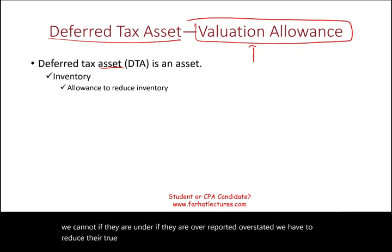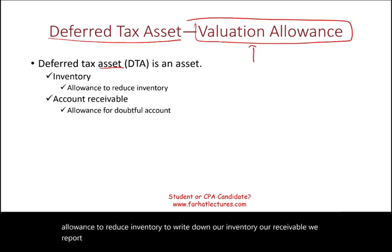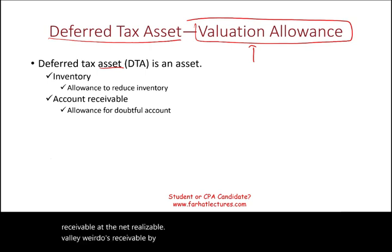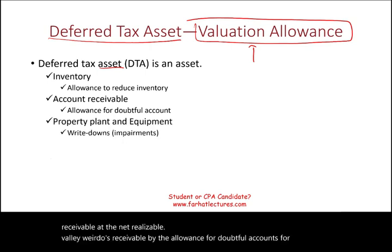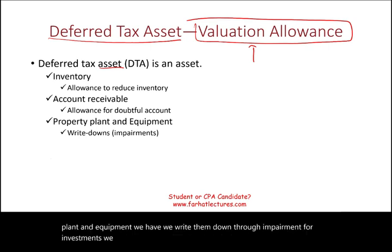For example, in inventory we have an account called allowance to reduce inventory to write down our inventory. For receivables, we report them at net realizable value, reducing them by the allowance for doubtful accounts. For property, plant and equipment, we write them down through impairment. For investments, we have a valuation allowance as well.